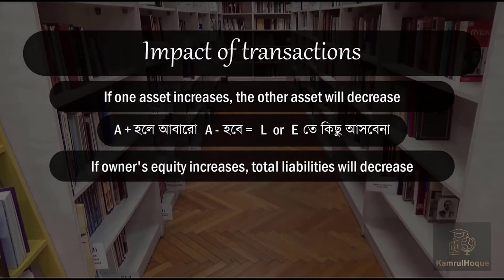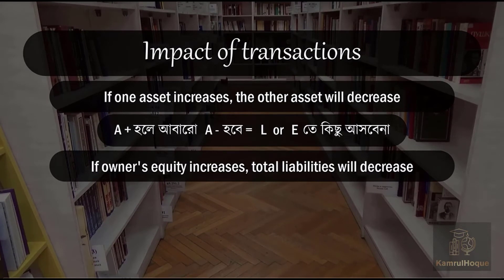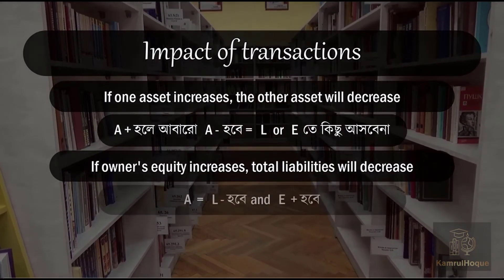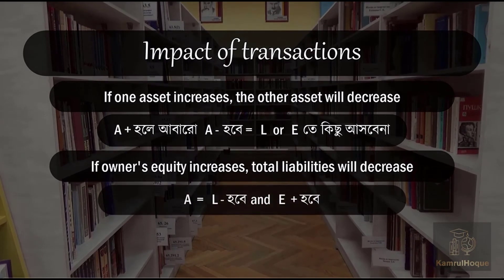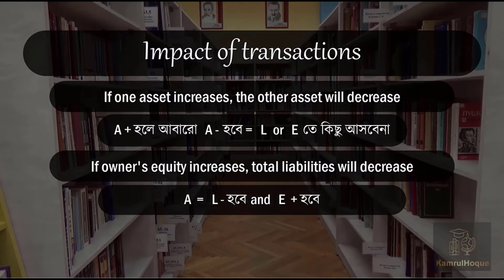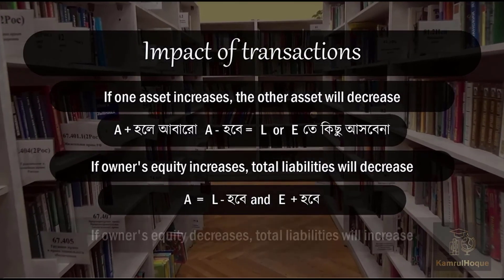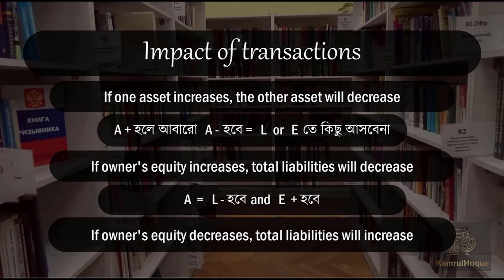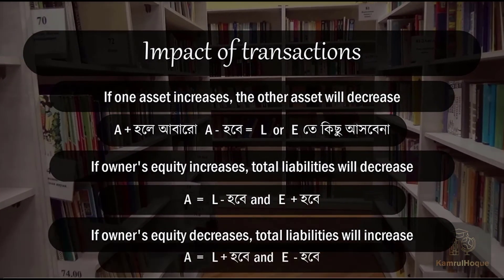If owner's equity increases, total liabilities will decrease. Conversely, if owner's equity decreases, total liabilities will increase. These rules maintain the balance of the accounting equation.